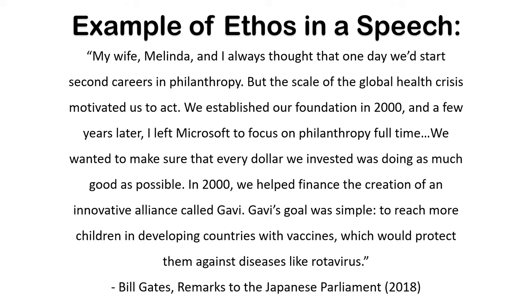This is an excerpt from Bill Gates' remarks to the Japanese parliament in 2018. My wife Melinda and I always thought that one day we'd start second careers in philanthropy, but the scale of the global health crisis motivated us to act. We established our foundation in 2000, and a few years later I left Microsoft to focus on philanthropy full-time. We wanted to make sure that every dollar we invested was doing as much good as possible. In 2000, we helped finance the creation of an innovative alliance called Gavi. Gavi's goal was simple: to reach more children in developing countries with vaccines, which would protect them against diseases like rotavirus.